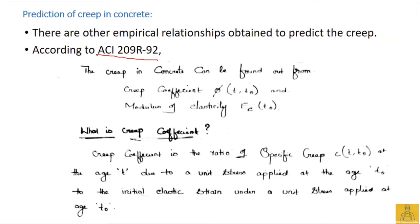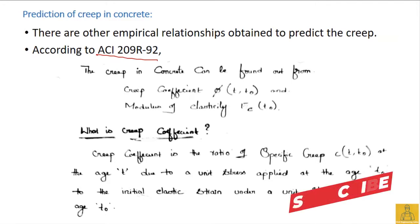There are certain empirical relationships given to estimate or predict the creep in concrete. Creep takes an infinite amount of time to fully take place in concrete — we don't know when the ultimate creep is going to be fully developed. It takes years — 30 years, 50 years — and the structure may fail before it has reached its ultimate creep.